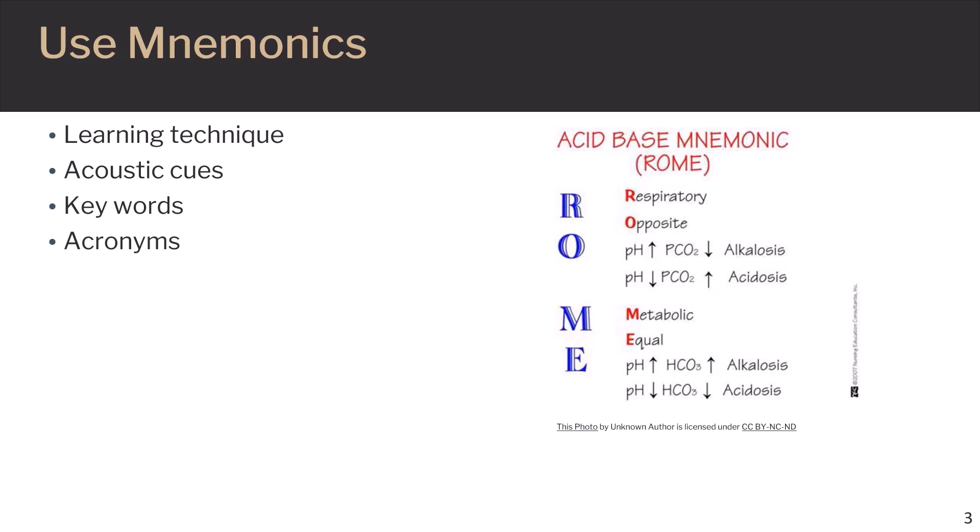For example, the image on this slide depicts using the acronym ROME, which stands for Respiratory Opposite Metabolic Equal. This is in reference to the direction of the pH values and the values of the partial pressure of carbon dioxide and bicarbonate ion. If you look at respiratory alkalosis and respiratory acidosis, or RO, when pH increases, the partial pressure of carbon dioxide decreases in alkalosis, and when pH decreases, the partial pressure of carbon dioxide increases in respiratory acidosis. In metabolic alkalosis and metabolic acidosis, when the pH increases, the concentration of bicarbonate ions, HCO3, increases. So here they go up equally, whereas the pH goes down and we see also the concentration of bicarbonate ions also decreasing.